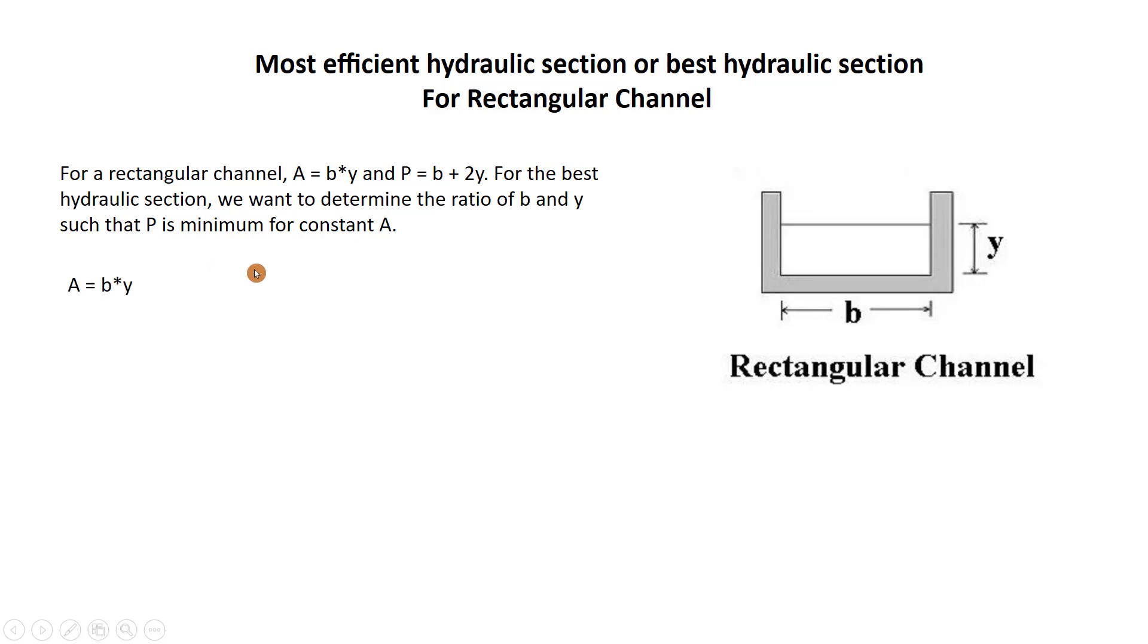Area is constant which equal to B and Y, but B and Y are variable. Wetted perimeter equal to B plus 2Y. So we have to derive this wetted perimeter equation to get the ratio of B and Y for a minimum wetted perimeter. But this equation has two variables.